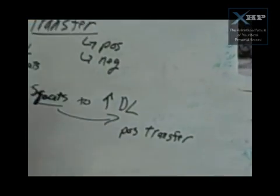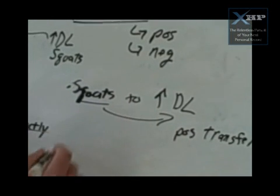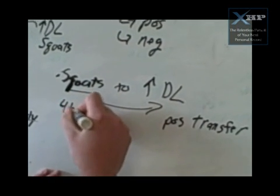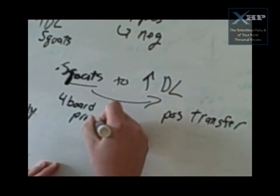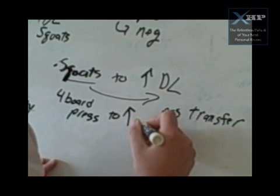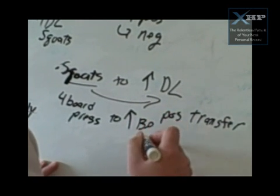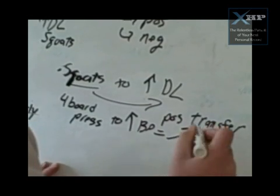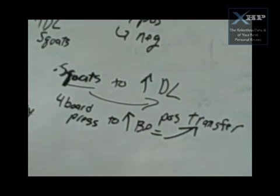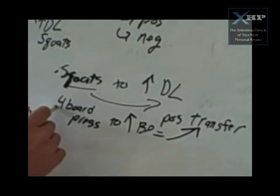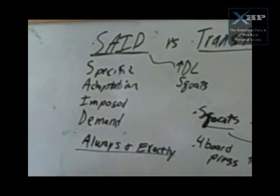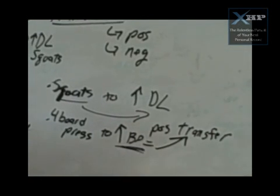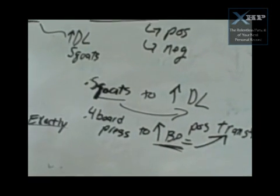So that's most of the time what we're going to be looking for. I'm going to do, for example, an accessory exercise. So I'm going to do for a bench, let's say, a four-board press. I'm going to do that to increase my bench press. If that happens, that's a positive transfer. So I did something that was similar, wasn't exactly specific, and I got better at a different exercise.